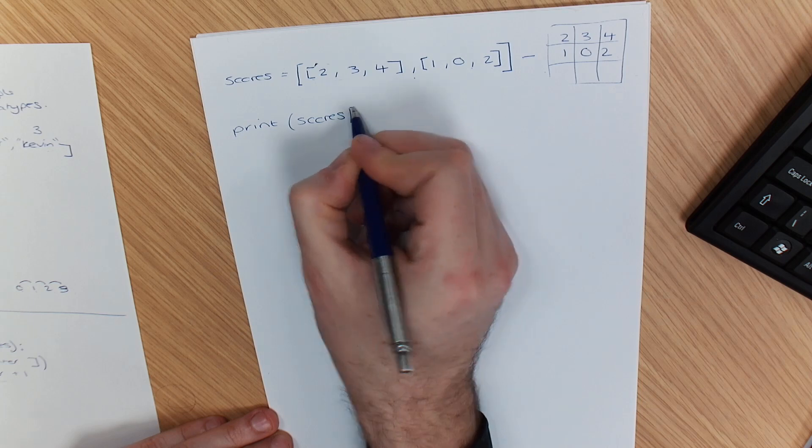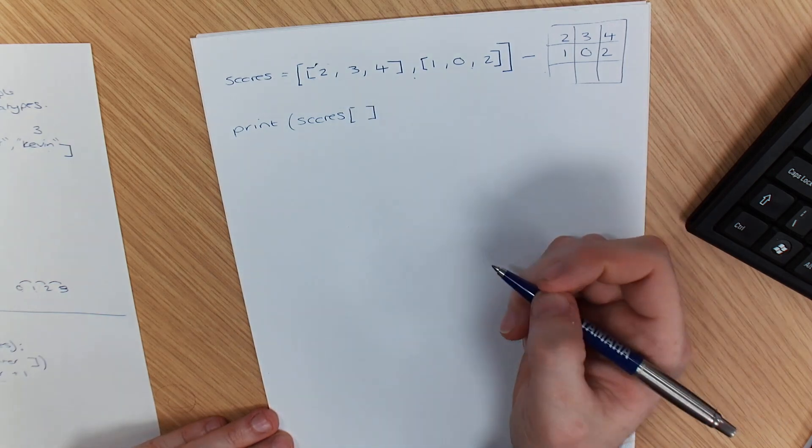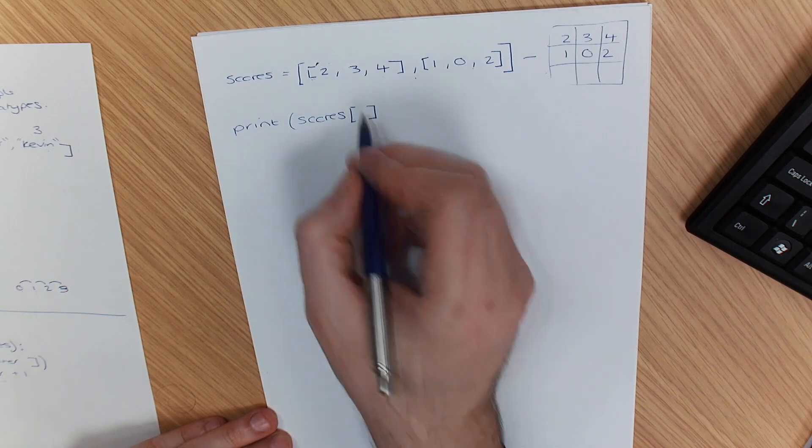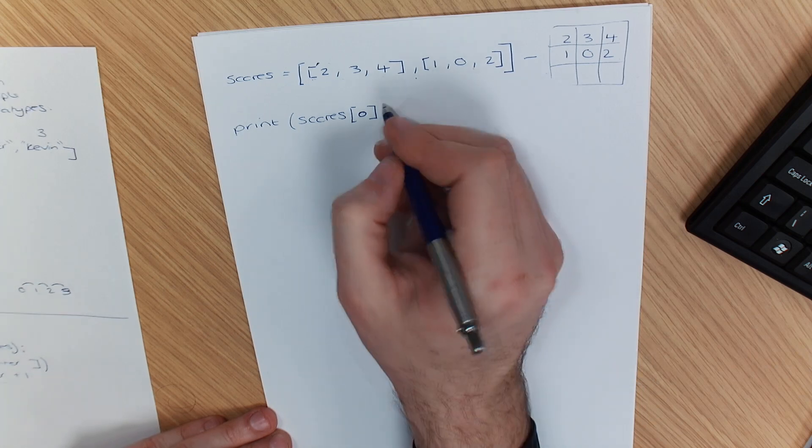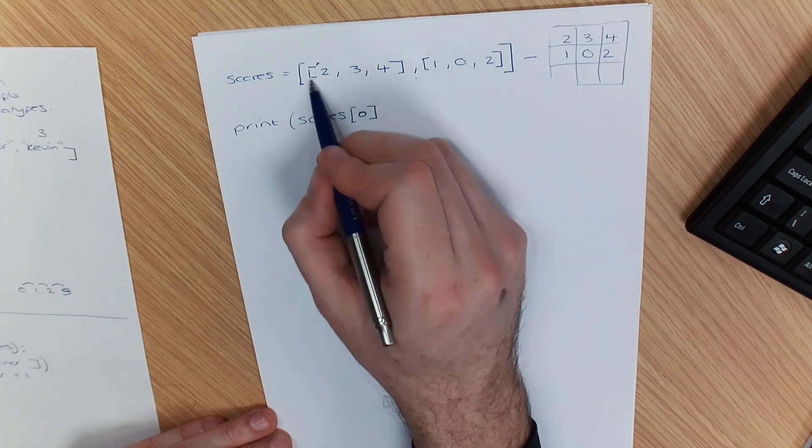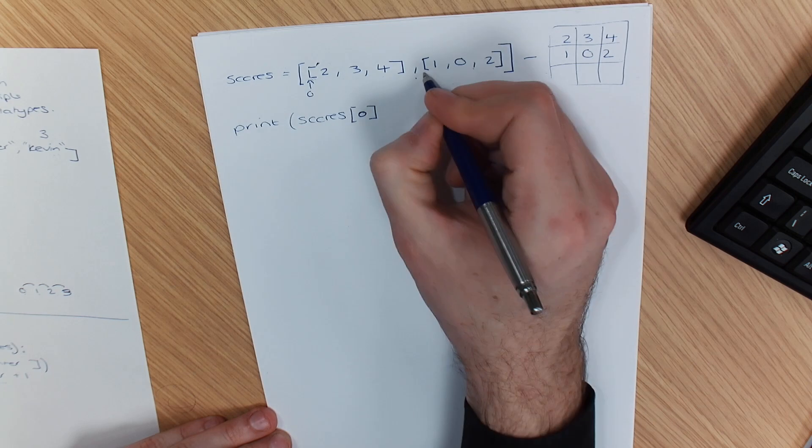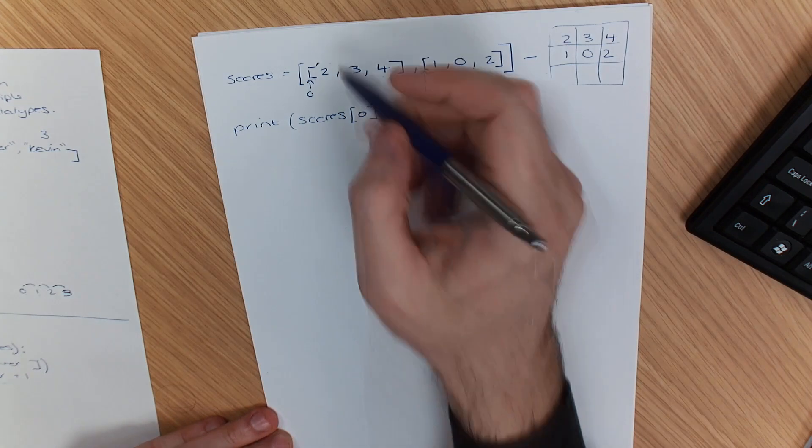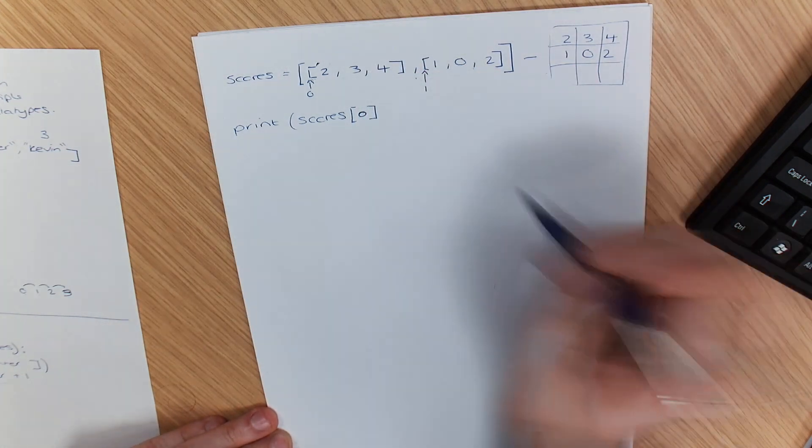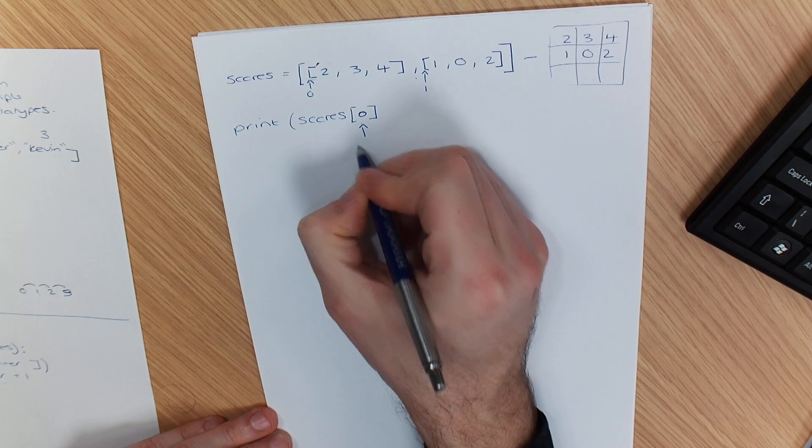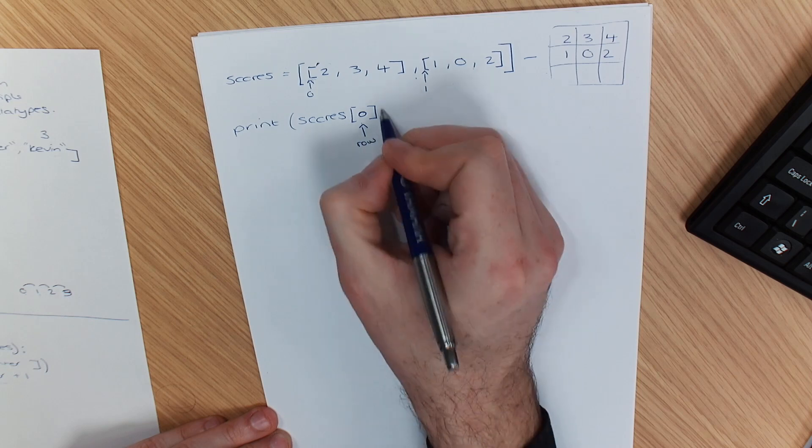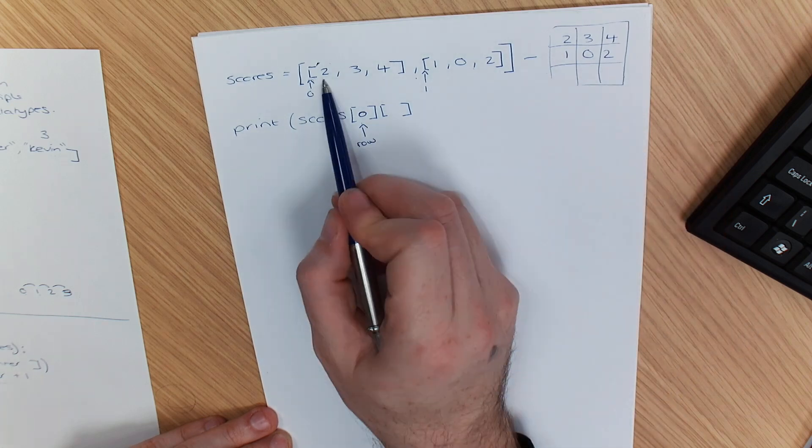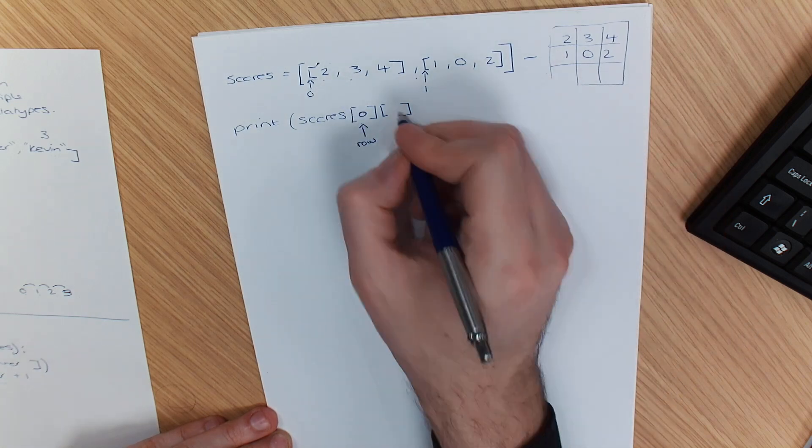Your first square bracket represents your row, so this is row zero because our index always starts at zero, so that's row zero, this is row one. Then we've got the column, so each of these are your columns, so you've got your row and I'm going to annotate that so you understand it.